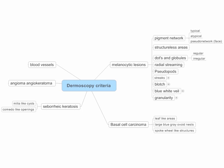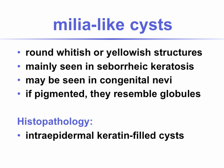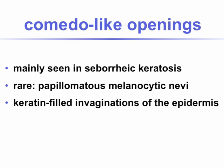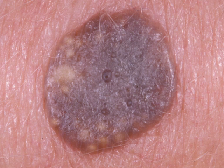Let's move on to the criteria of seborrheic keratosis, mainly milia-like cysts and comedone-like openings. Milia-like cysts are round, whitish or yellowish structures, mainly seen in seborrheic keratosis. Sometimes, if they're small in size, they can be seen in congenital nevi. If they're pigmented, they resemble globules. Histopathologically, they correspond to intraepidermal keratin-filled cysts. Comedone-like openings are mainly seen as well in seborrheic keratosis, sometimes in papillomatous melanocytic nevi; they correspond to keratin-filled invaginations of the epidermis.